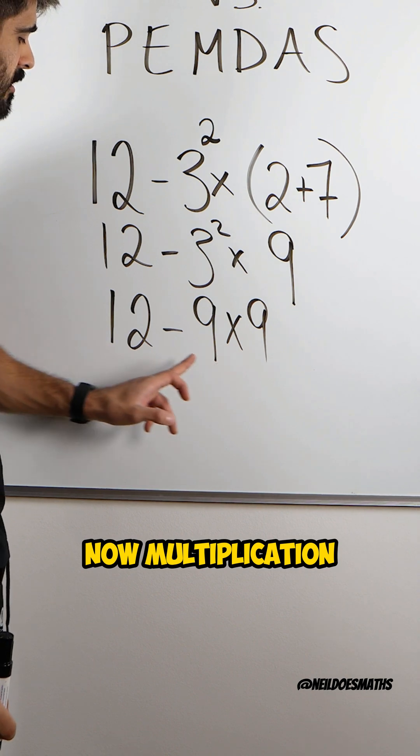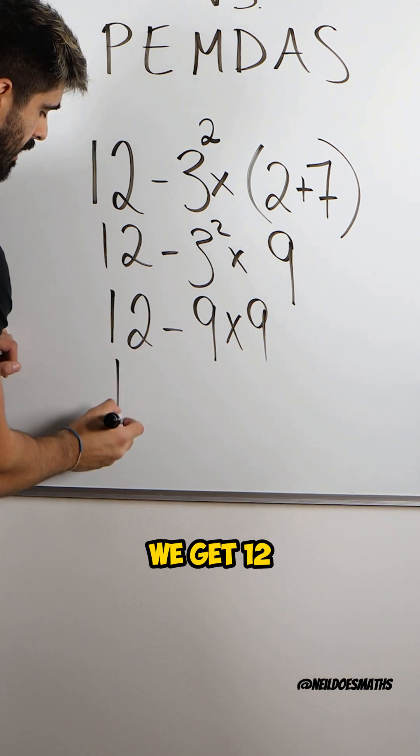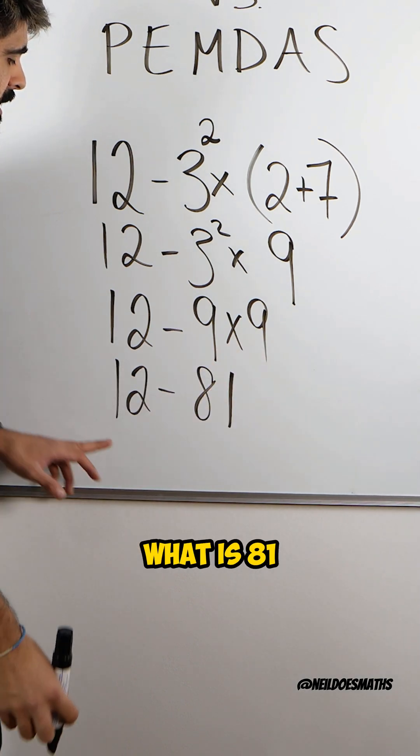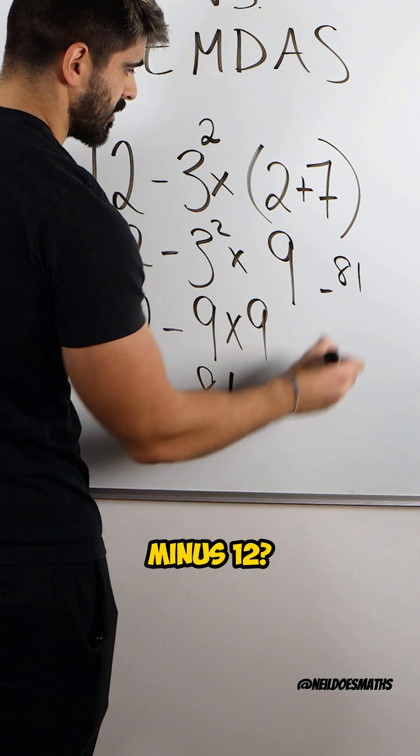Now, multiplication is more powerful than subtraction. We get 12 minus nine times nine, which is 81. What is 81 minus 12?